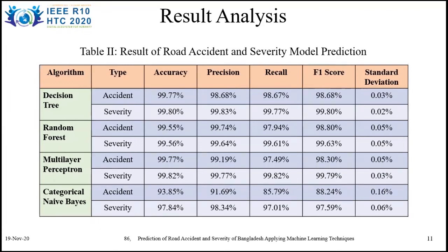In the case of the decision tree, accident accuracy is 99.77% with a standard deviation of 0.03%, and the severity accuracy is 99.80% with a standard deviation of 0.02%.